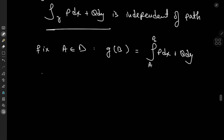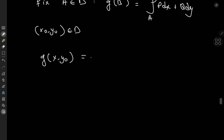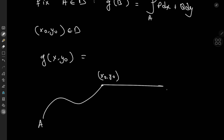Now let's make use of this function. We're going to choose another point (x₀, y₀) belonging to d and evaluate g at (x, y₀), where x is different from x₀. We'll use the contour consisting of a smooth path connecting a to the point (x₀, y₀), and then a horizontal line leading to (x, y₀).